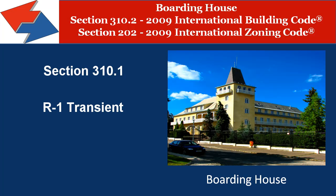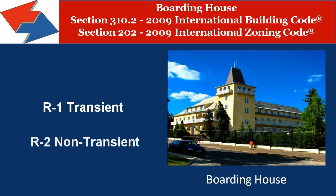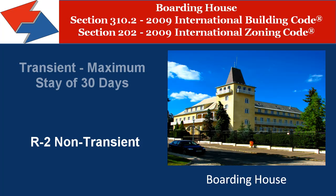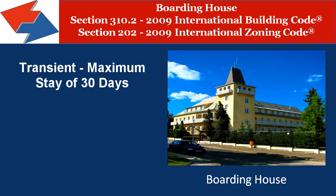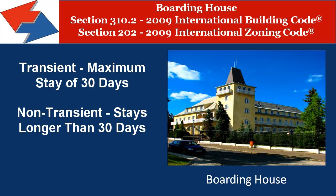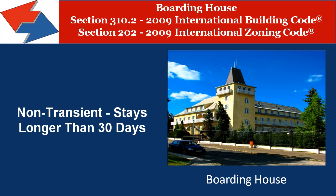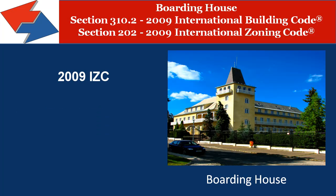In Section 310.1, you will find that a boarding house can be classified as R1 transient or R2 non-transient. When we look at the word transient, we are talking about someone that stays for a maximum of 30 days. A non-transient person would stay longer than 30 days.